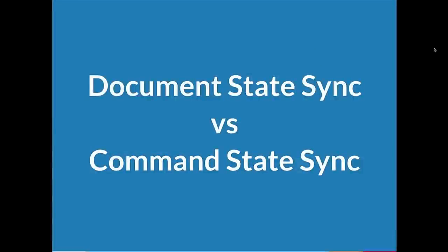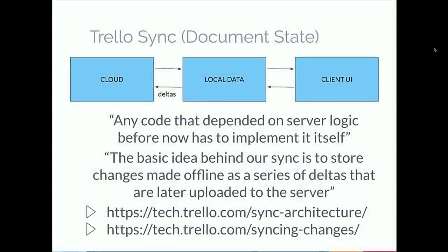Based on my experience, there are two types of synchronization: document state and command state. If you use Workbox — there was a progressive web apps workshop yesterday — you can use background sync to sync your application by storing requests and executing them after you are back online. That is command state sync. For document state, I borrowed from the Trello synchronization architecture — the first time I learned about synchronization. Any code that depends on server logic has to be implemented on the client. They only send deltas of the data modification — you have a prior document, your current document, and you send the delta. That is document state.